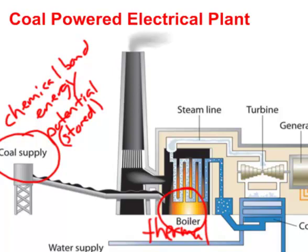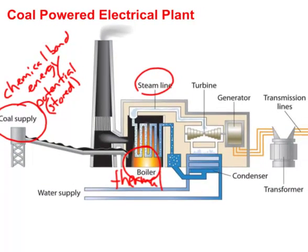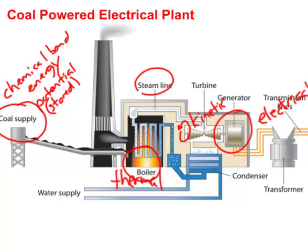From that heat we get high-pressure steam. That high-pressure steam moves through a pipe and causes a turbine to spin very rapidly. All of this movement of the steam and turbine is kinetic energy. The kinetic energy of the turbine is connected to a generator — a coil of wire moving inside a magnetic field — and we get electrical energy. So: chemical bond energy → thermal energy → kinetic energy → electrical energy.